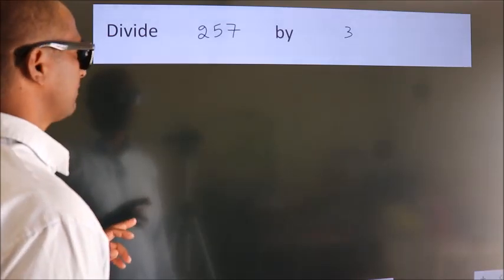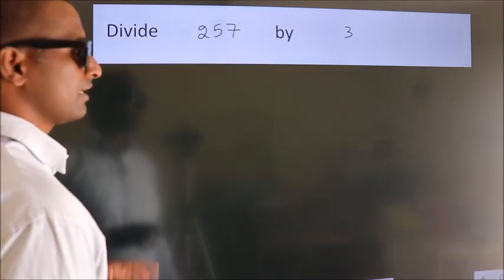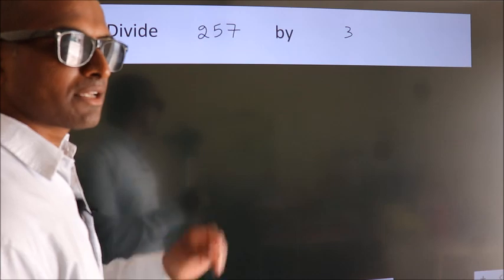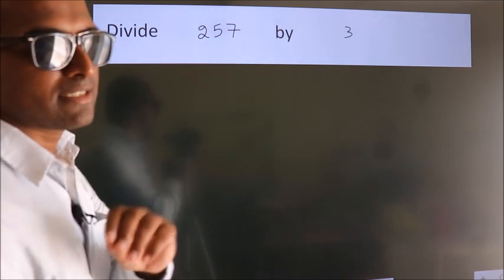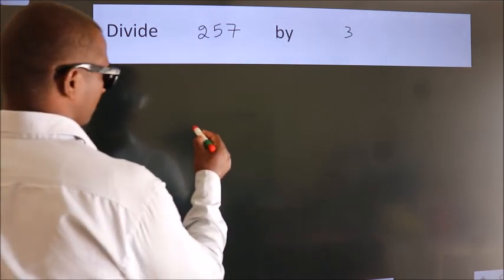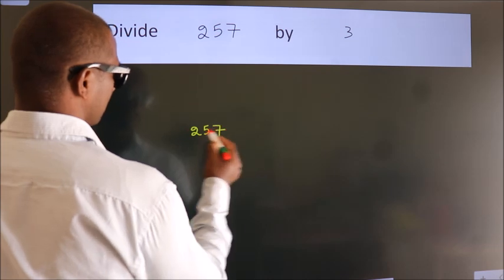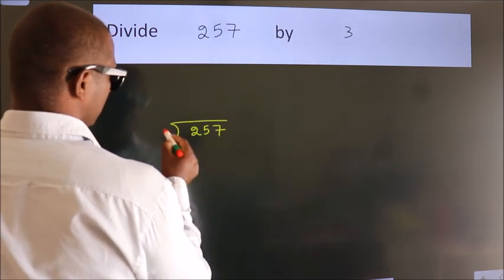Divide 257 by 3. To do this division, we should frame it in this way. 257 here, 3 here.